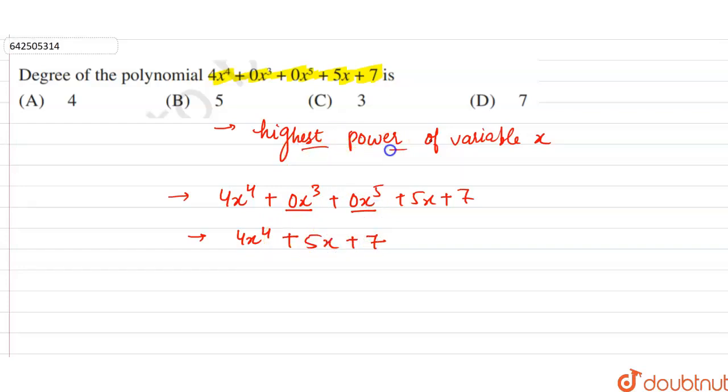Now, in this expression the highest power of variable x is 4. So we can say that the degree of the given polynomial is 4, and this is the required answer.